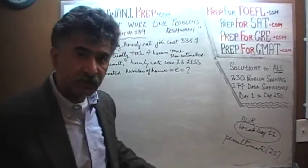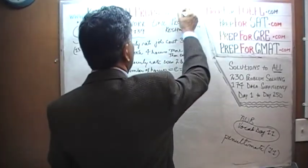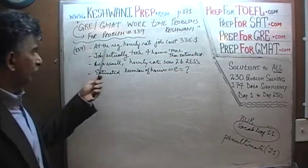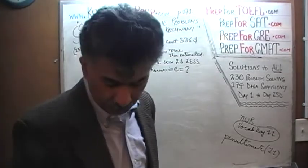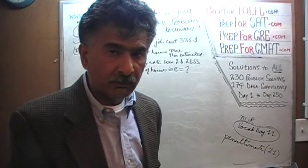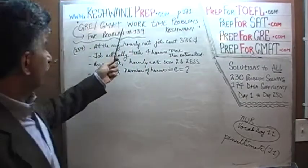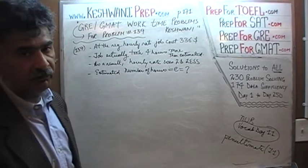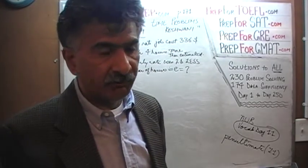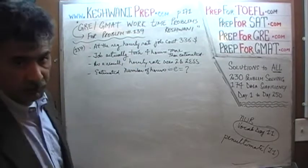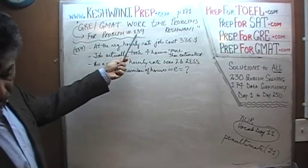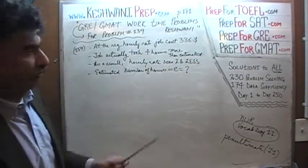Page number 171, the very first problem in the second column. Page 171. Now before we actually start with problem number 137, which is already on the blackboard here, I want you to quickly look at the last problem on the page, problem number 139. Problem number 139 is what is known as work time problems. They appear on a regular basis both in the GRE and the GMAT. I just finished taping a video where we solved a whole bunch of these work time problems, and the very first problem I taped in that video was problem number 139, the very last problem on page number 171. So we are not going to do that problem again.